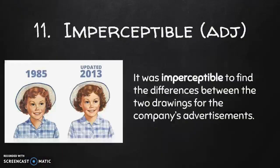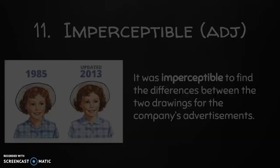Number eleven is imperceptible, which is an adjective. The definition for imperceptible is impossible to see or notice, very slight or gradual. The example sentence is: it was imperceptible to find the difference between the two drawings for the company's advertisements. When something is imperceptible, it's hard to perceive a difference — just like in the pictures shown, a drawing of a girl was updated from 1985 to 2013 but there are barely any differences.